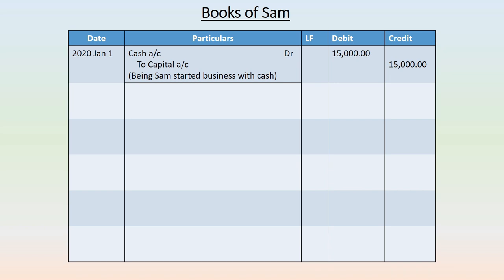Cash account is an asset account. Assets are related to the real account, so you apply real account rules: debit what comes in and credit what goes out. Here, cash comes into the business, so cash account is to be debited. Capital account is a personal account — the personal account rule says debit the receiver and credit the giver. Sam is the giver bringing capital into the business, so capital account should be credited. After passing the journal entry, write down the narration — a short description of the transaction.